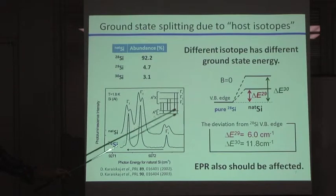This figure is a photoluminescence spectrum measured with aluminum-doped silicon. And whose host material is natural silicon in upper spectrum and pure 28-silicon in lower spectrum. So, you can see the clear disappearance of the doublet by isotopically purification. This fact implies that different isotopes have different band-gap energy.